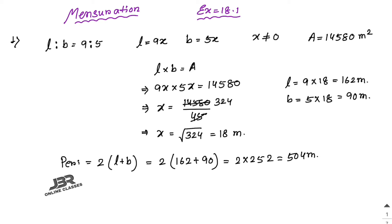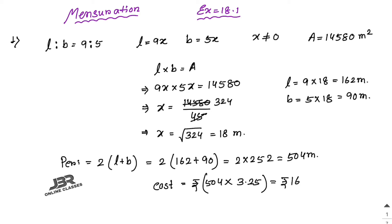The cost for fencing equals 504 into the rate of 3.25, which gives rupees 1638 as the answer.